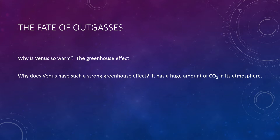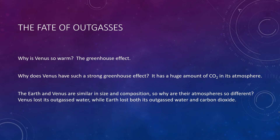A deeper question still remains. Given their similar sizes and compositions, we expect Earth and Venus to have similar levels of volcanic outgassing — gases being put out into the atmosphere when it was forming — and the released gases ought to have had the same compositions as well. So why is Venus's atmosphere so different from Earth's? They're the same size, formed in the same way, not terribly far apart from the Sun, and should have had the same outgassing. So what's so different?